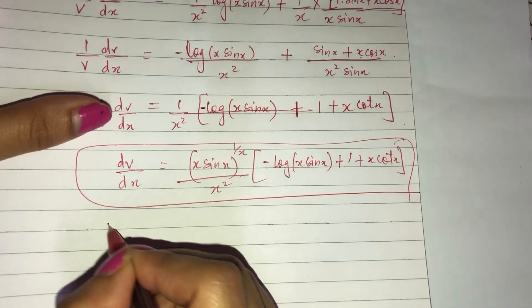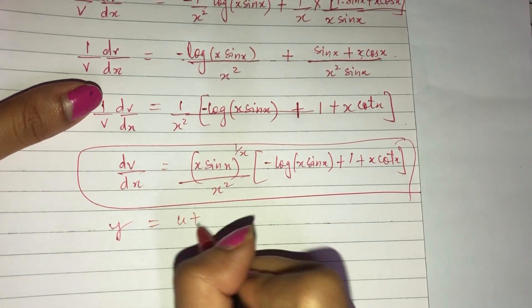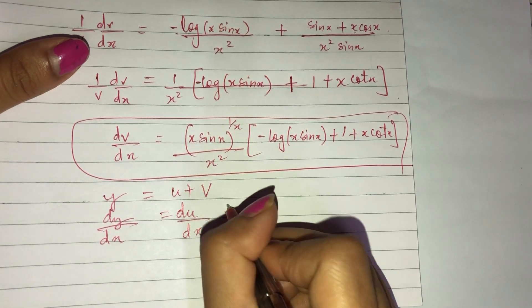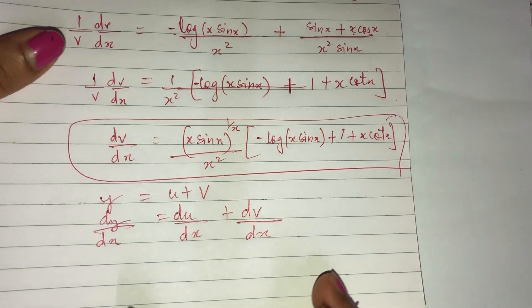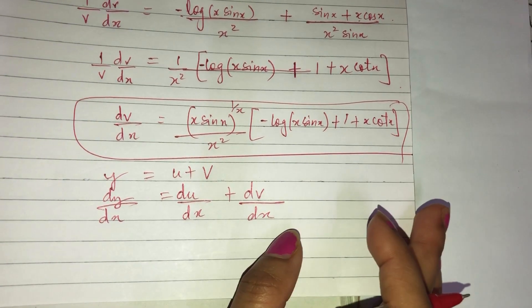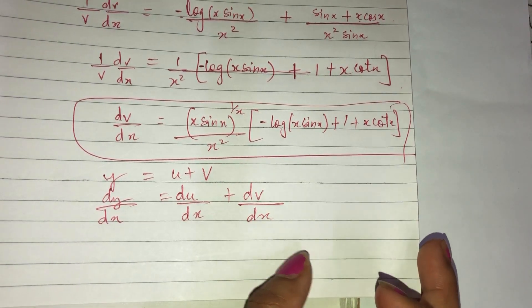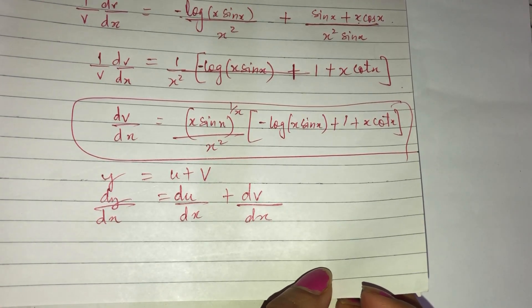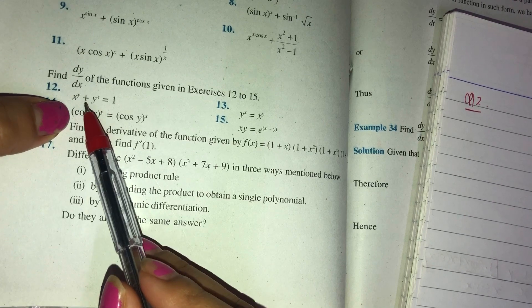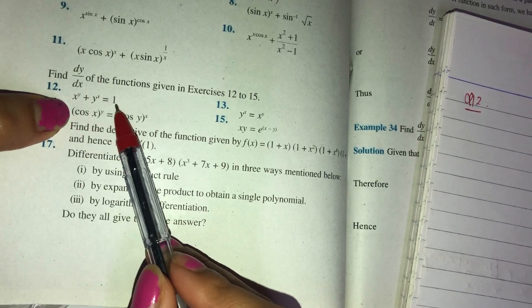Not much is left — we know y = u + v, so dy/dx = du/dx + dv/dx. Just add both values and write the answer. You can ask any doubt in the comments. Next, Question Number 12: find dy/dx. The equation is x^y + y^x = 1. This one is important.